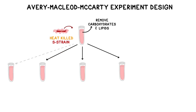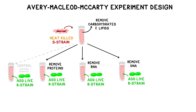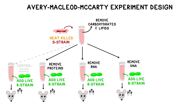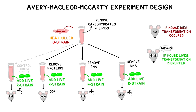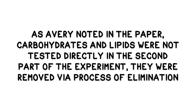The researchers disabled each of these components in S-strain bacteria, mixed it with innocuous R-strain bacteria that was primed for transformation, incubated the mixture, and then injected the combination into mice. If the mouse still died despite removing a component, they would know that the biomolecule was not the transformation principle. As Avery noted in the paper, carbohydrates and lipids were not directly tested in the second part of the experiment—they were removed via process of elimination.